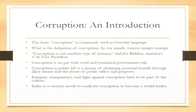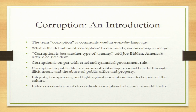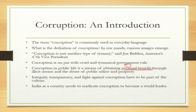Corruption is something we come across very often in India. Corruption in public life is a means of obtaining personal benefit through illicit means and the abuse of public office and property. Let us underline the key terms — one is personal benefit. The one who is corrupt, who is getting into corrupt practice, if he takes money for doing some kind of service, that is getting bribery. Then there is the element of illicit means — that is not legal.